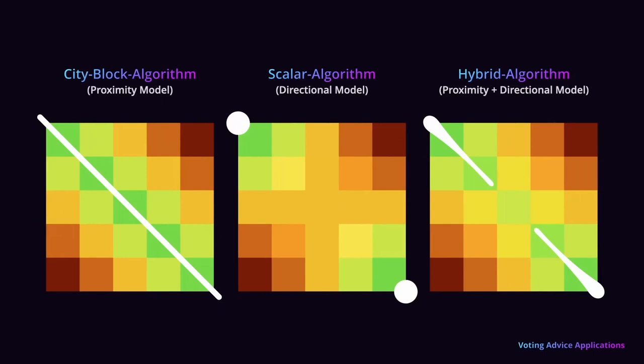Which algorithm is best? We don't know for sure — data will tell, and it depends on your intentions and design choices. Algorithms based on the proximity model tend to favor temperate parties, while those based on the directional model gently push users toward the extreme ends. Hybrid algorithms should yield more balanced results. But don't expect any of them to be incredibly accurate — at the end of the day, these are still only models.